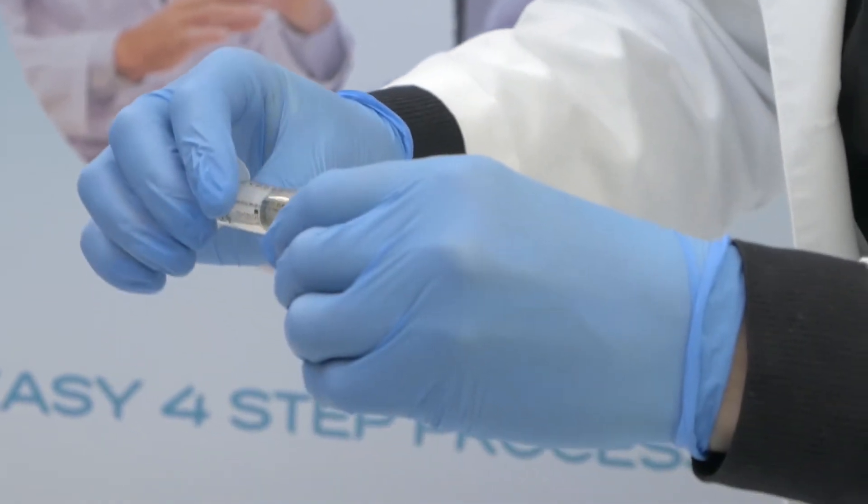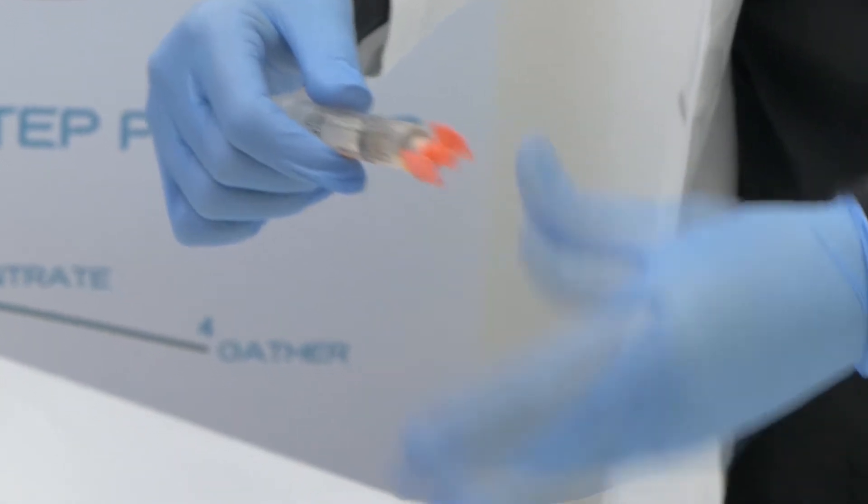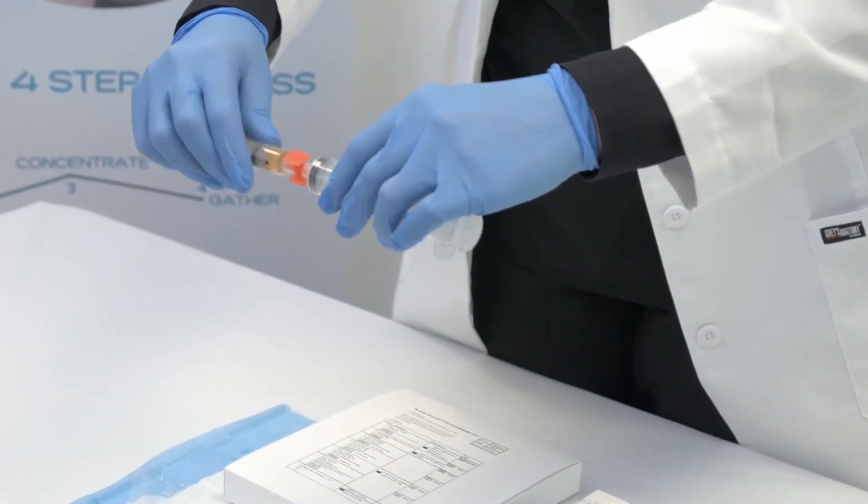Insert 2 ml of sodium citrate from the citrate syringe into the 30 ml syringe using the red luer lock to luer lock connector.